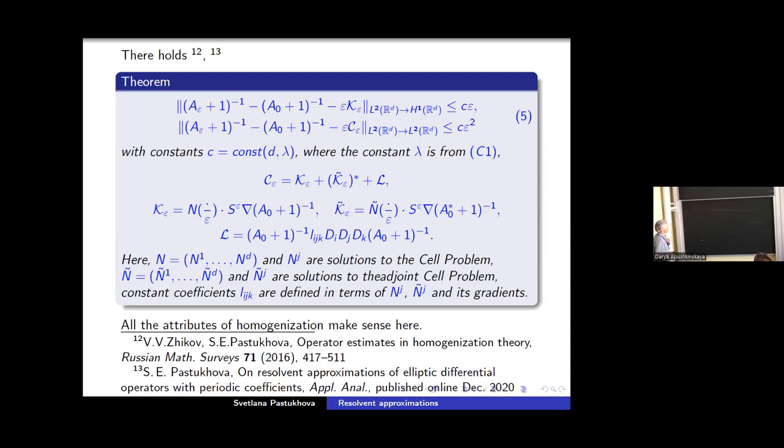Also you see here operator L which does not depend on ε, but is defined as usual for correcting terms via solution to the cell problems. The result, the first estimate five was proved in our paper with Vasily Vasilich Zhikov. Later it was understood that our ideas can be extended and the second estimate five can be obtained.